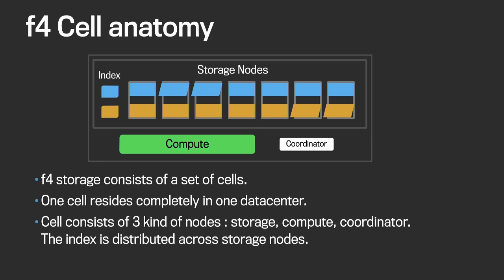Next I'll explain the concept of a cell. A cell is the basic building block of F4 storage, and the whole F4 storage is made of a set of independent cells. Within a cell we have three kinds of nodes. The first is the storage node, which actually stores data on hard disk. The second is the compute node, needed for Reed-Solomon decoding — those are the CPU-heavy machines. The third is the coordinator node, which monitors system health and schedules all maintenance jobs.